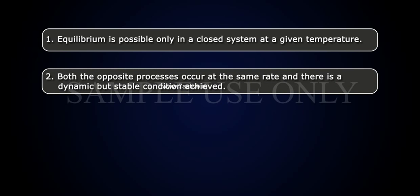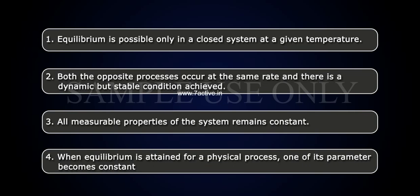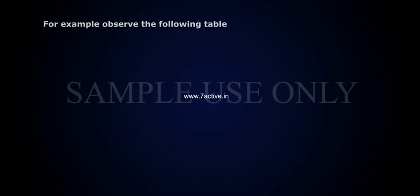3. All measurable properties of the system remain constant. 4. When equilibrium is attained for a physical process, one of its parameters becomes constant. For example, observe the following table.